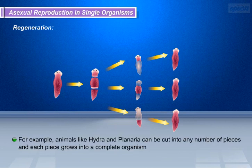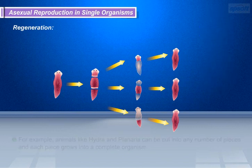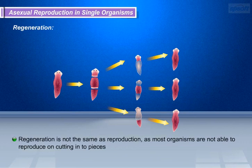For example, animals like Hydra and Planaria can be cut into any number of pieces, and each piece grows into a complete organism. If Planaria is cut into a number of pieces, then each piece grows into a complete organism.